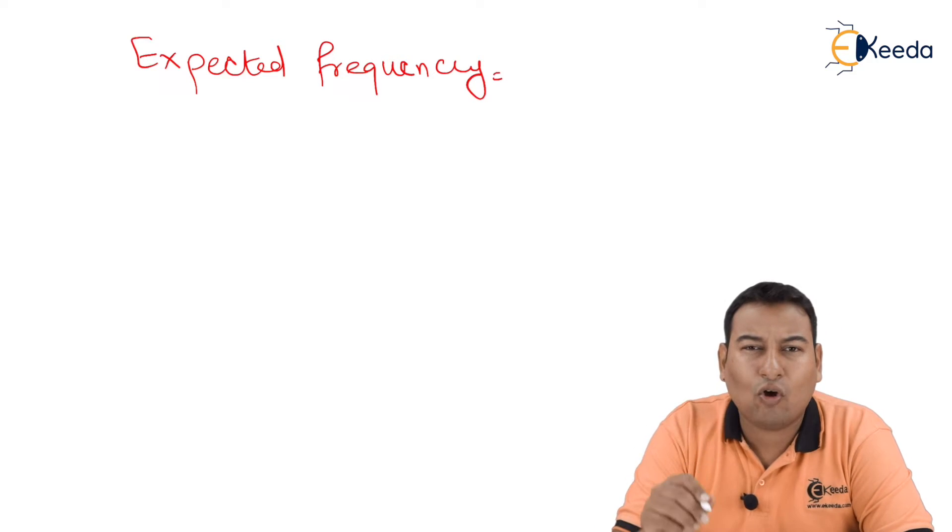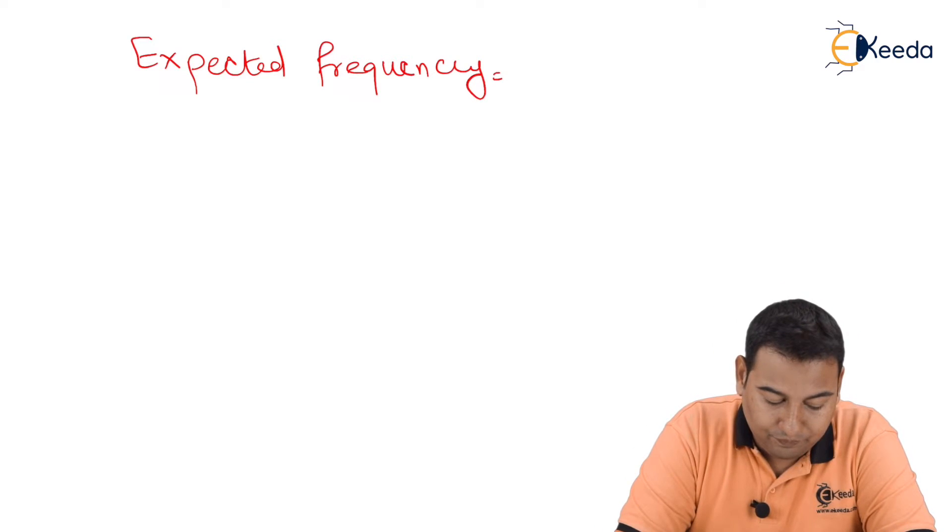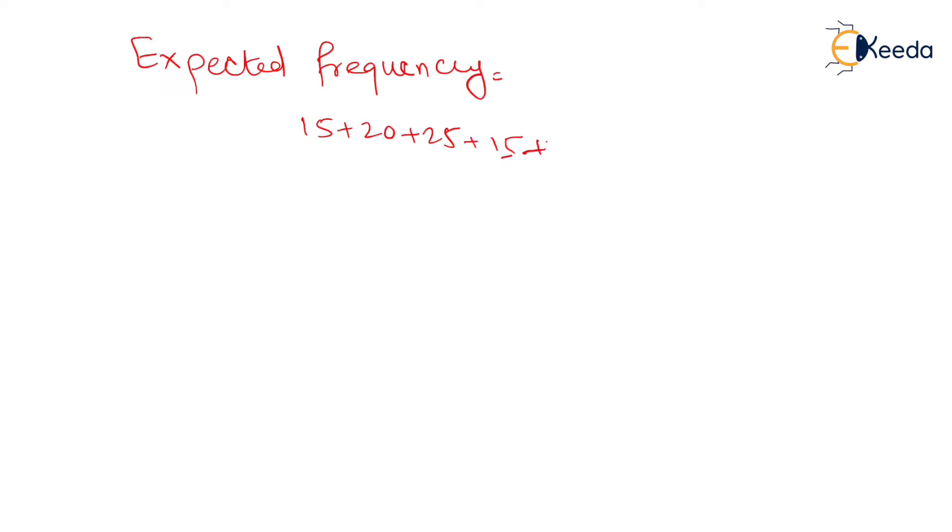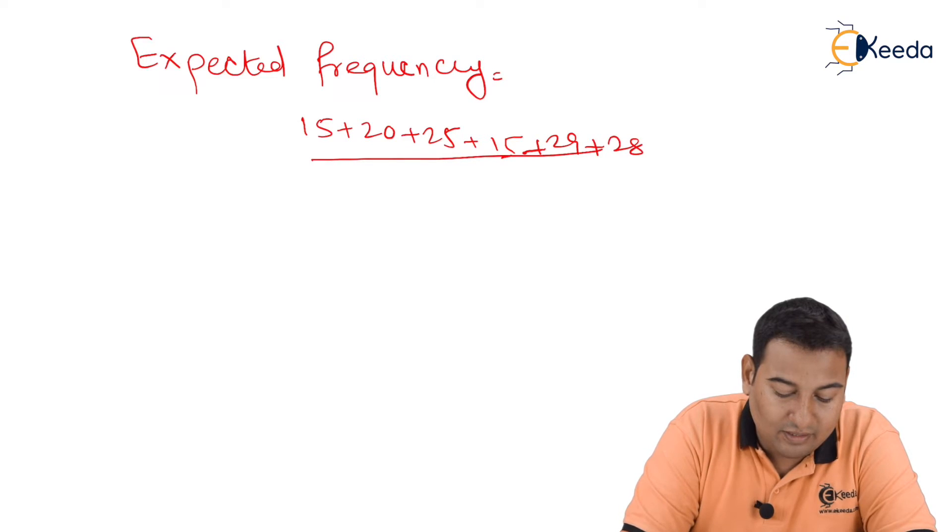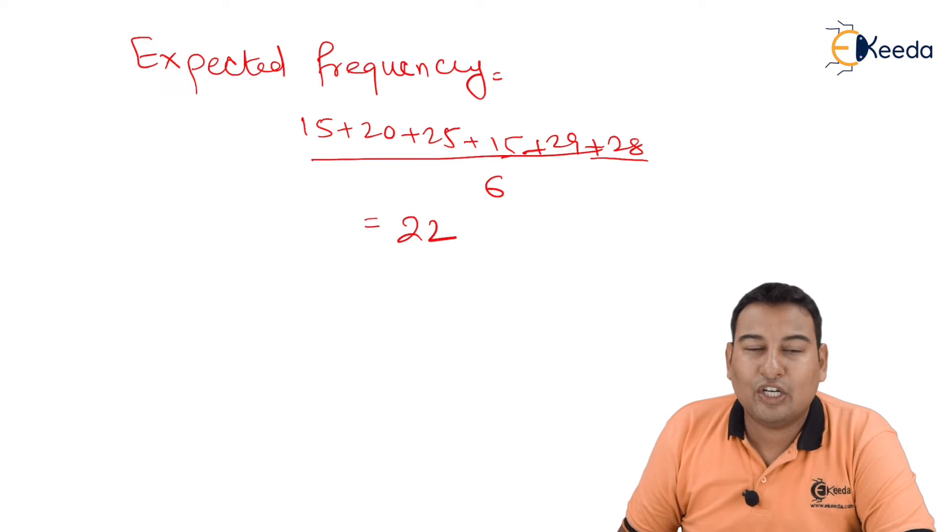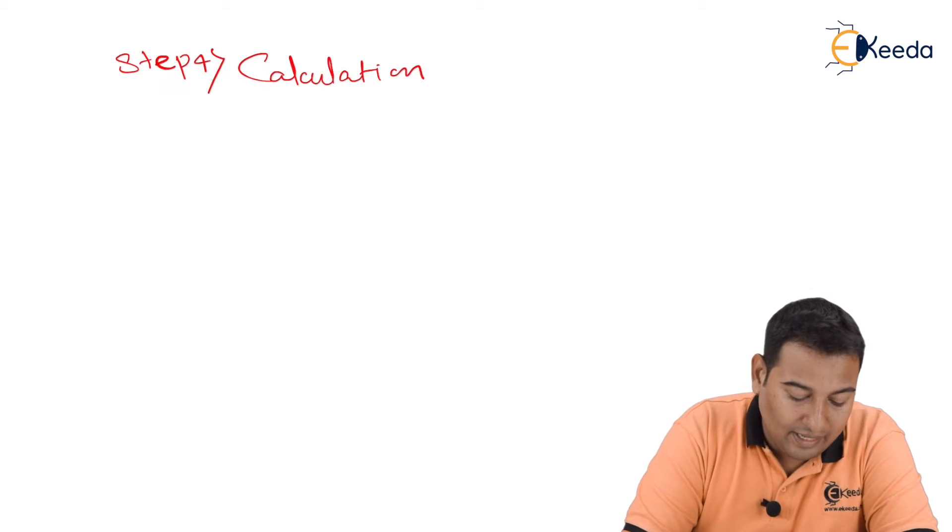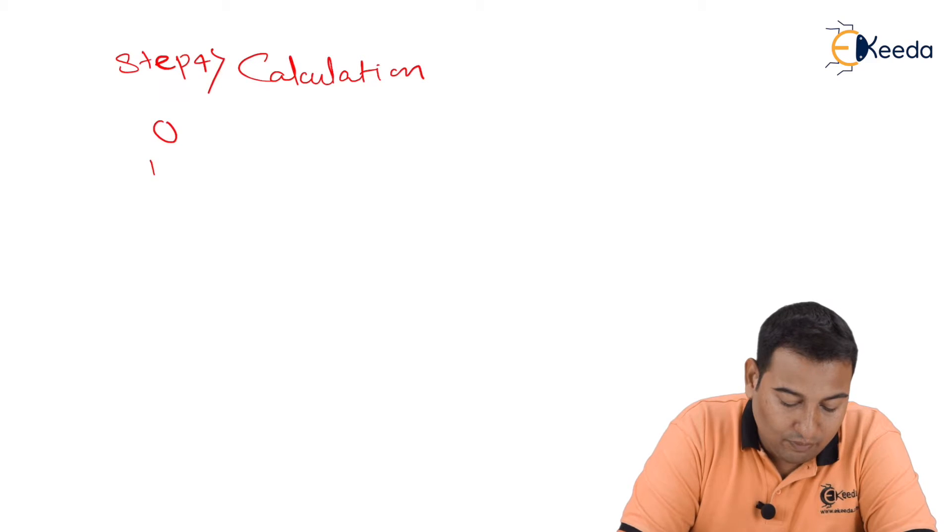Therefore my expectation is I'm going to add all and divide by 6, which is equal to 15 plus 20 plus 25 plus 15 plus 29 plus 28, the whole divided by 6. And if I do it, I'll get the value as 22. So 22 is my expectation. So let's move on with the calculation part. Observed means whatever is given.